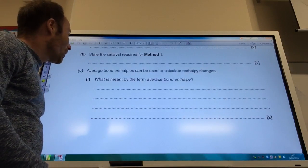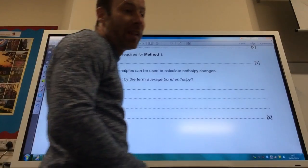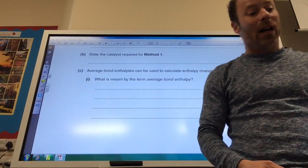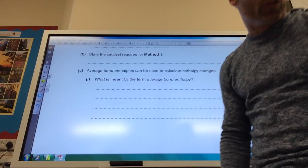So state the catalyst required for method one. Remember method one was reacting the alkene with steam. So you need an acid catalyst. Most people go for phosphoric acid.